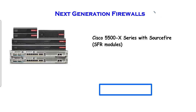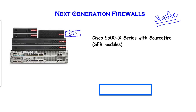Cisco acquired a company named Sourcefire, which was operating across all four areas: IPS, URL filtering, AMP services, and application visibility and control. After the acquisition, Cisco said they could erase the CX security software from their SSD drives and install Sourcefire's SFR OS instead, operating the same way CX security did — but now with AMP services as well.